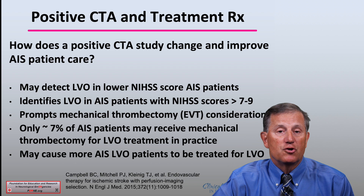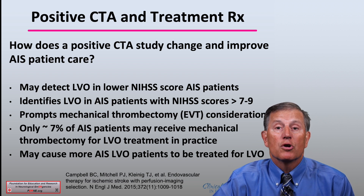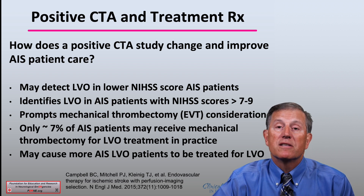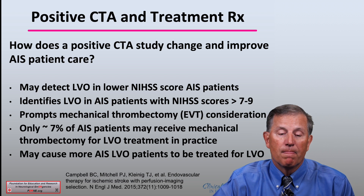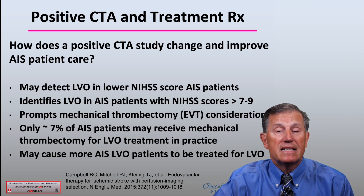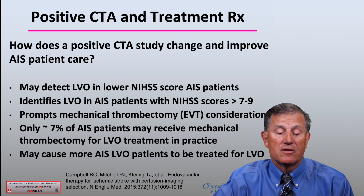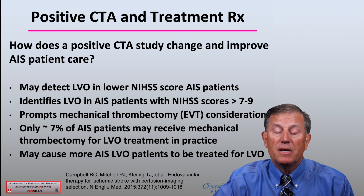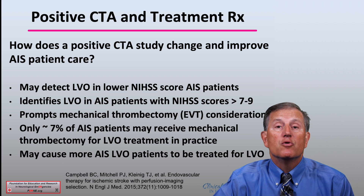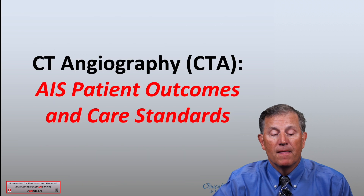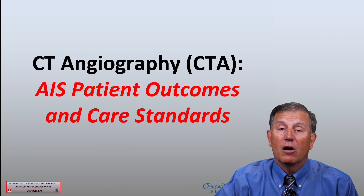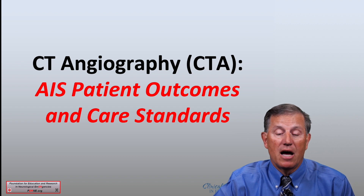This suggests that if you aren't able to detect it with a CTA, you still should be able to optimally care for these stroke patients. But what is most important is the ability to determine with a CTA that there is a thrombus or embolus in a large vessel. It may cause more of these AIS LVO patients to be treated aggressively for the LVO using EVT. What about stroke patient outcomes and care standards with regard to CTA angiography?